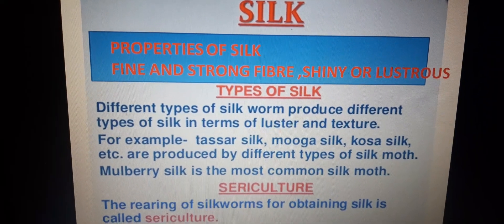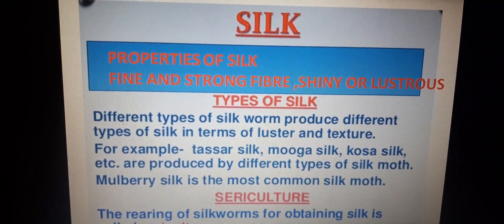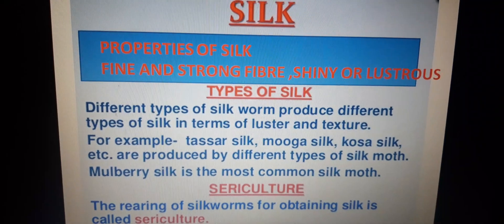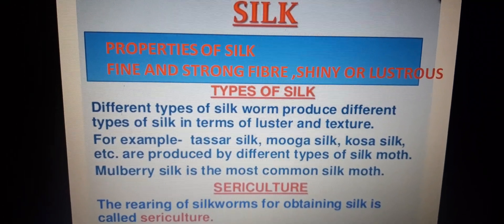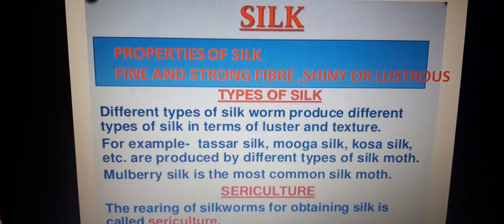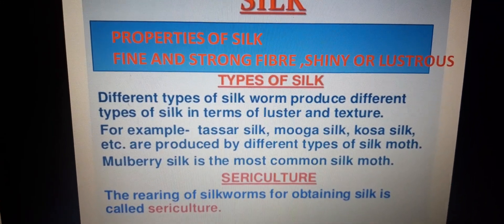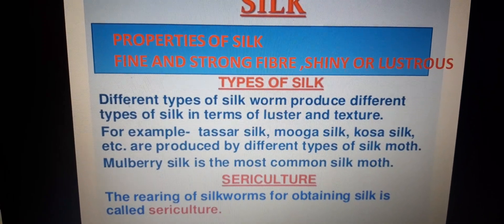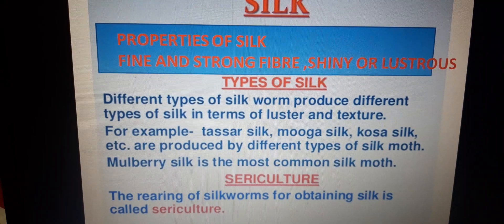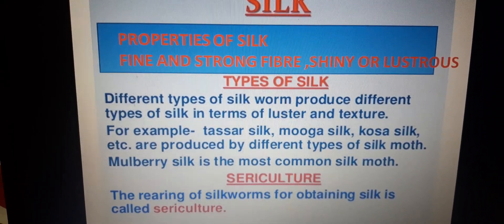Silk is an animal fiber. It is made by the caterpillars of silk moth. It is a very fine but strong fiber. It is shiny and lustrous, as well as costly. There are different types of silk — for example, tashar silk, mooga silk, kosha silk, eri silk, etc. These different kinds of silk are produced by different kinds of silk moth.